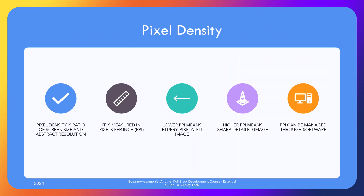Pixel density is a ratio between screen size and its resolution, measured in pixels per inch, or PPI — a ratio of the abstract resolution of the image and physical screen size. As a general rule, the lower the PPI, the more blurred or pixelated an image is; conversely, higher PPI ensures a higher quality image with fine details and sharper text. Viewing distance also matters in image quality, making it a combination of multiple factors. Since quality user experience is a big deal, there are options available to detect PPI and mitigate accordingly, which we shall cover in our responsive images video.